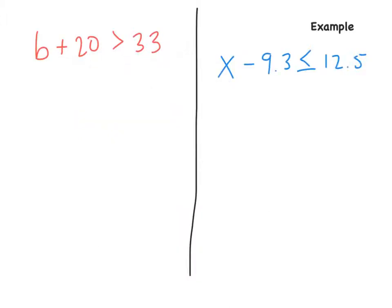So now let's try to solve these inequalities. We have two examples. The first one, this is a b, not a 6. So b plus 20 is greater than 33. How do we solve for b? What is the opposite of plus 20? The opposite of plus 20 is minus 20. So subtract 20 to both sides. So b is greater than 33 minus 20 is equal to 13. And 13, b is greater than 13 is our final answer.